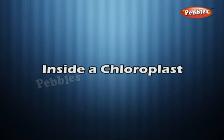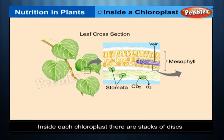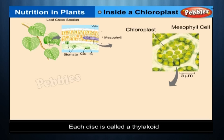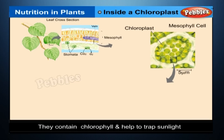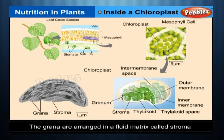Inside a chloroplast: Each chloroplast contains stacks of discs, each disc called a thylakoid. They contain chlorophyll and help to trap sunlight. The stacks of thylakoids are called grana — the light reaction takes place here. The grana are arranged in a fluid matrix called stroma, where the dark reactions take place.